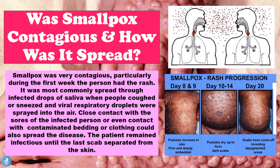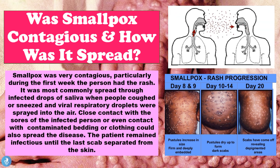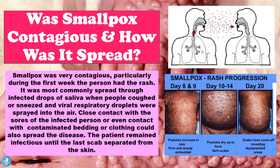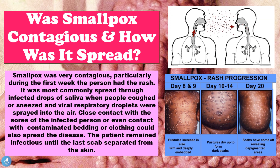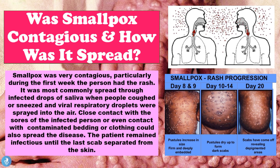So was smallpox contagious and how was it spread? Smallpox was very contagious, particularly during the first week the person had the rash. It was most commonly spread through infected droplets of saliva when people coughed or sneezed and viral respiratory droplets were sprayed into the air. Close contact with the sores of the infected person or even contact with contaminated bedding or clothing could also spread the disease.